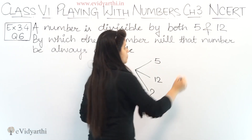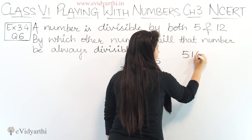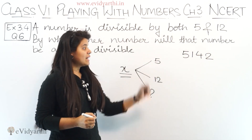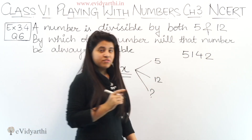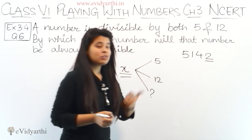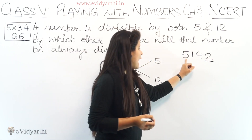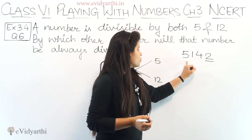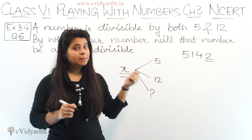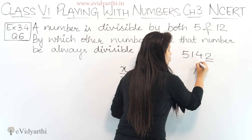Let's take an example. If I take the number 5142, this number is divisible because the last digit is 2. This number is also divisible because if I add the digits — 5, 6, 7, 8, 9, 10, 11, 12 — the digit sum is 12, which means it is divisible by both numbers.